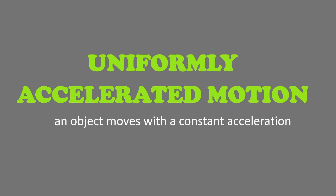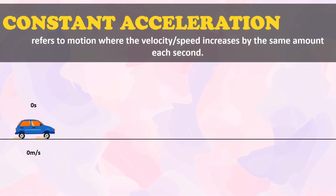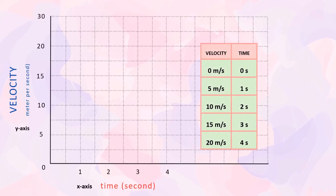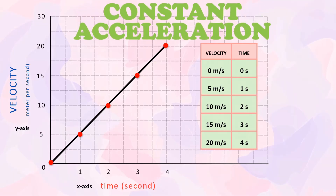When we say uniformly accelerated motion, the object moves with constant acceleration. Acceleration is the rate of change in velocity with time — it is a vector quantity having both magnitude and direction. Constant acceleration refers to motion where the velocity increases by the same amount each second. Since acceleration is constant, the slope of the velocity-time graph should be a straight line with constant slope, inclined at some angle with respect to the time axis.